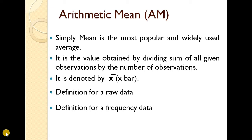Arithmetic mean — it is simply the mean. It is a popular and widely used average. It is the value obtained by dividing the sum of all given observations by the number of observations. We covered x-bar for raw data, frequency data, shortcut methods, and weighted arithmetic mean.